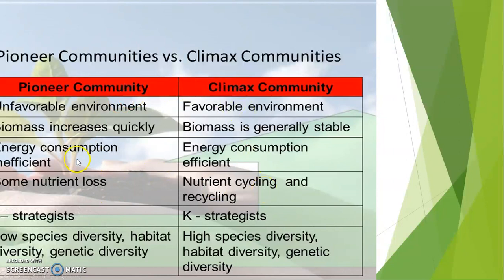So at last, we can summarize the factors which show an increasing trend as we go from pioneer to climax community. You can write these in your notebook or scribble pad: productivity, size, and biomass per energy all increase.